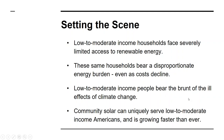First, low to moderate income households face severely limited access to renewable energy overall. While 49 million American households earn under $40,000 annually and account for 40% of homes, they comprise less than 5% of solar installations, according to a study by George Washington University. Second, these same households also bear a disproportionate energy burden — low income households pay on average three times as much for energy as their wealthier counterparts, according to the American Council for an Energy Efficient Economy.